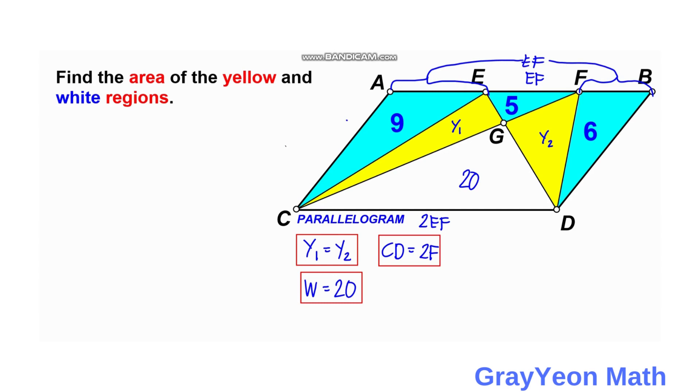Next thing that we need to do is we need to compare, actually we need to add these two triangles, AEC and FBD. We can actually add them, and their base is EF, and we compare that to this triangle ECD. If we compare that, if we focus on ECD, we have 20 plus Y1 is equal to one half times the base, which is 2EF, and the height of this parallelogram.